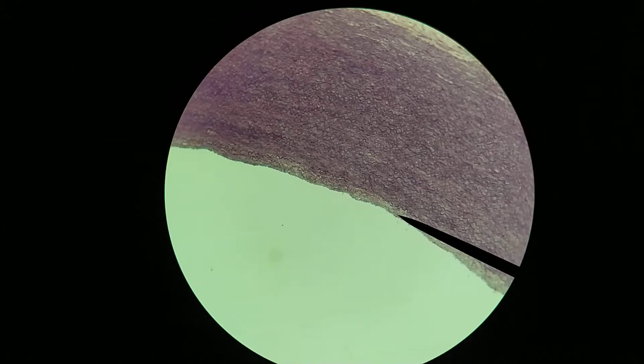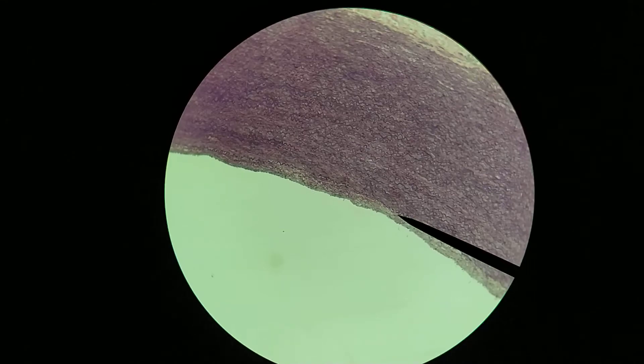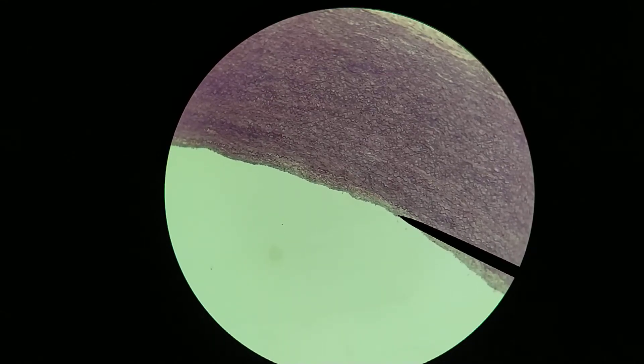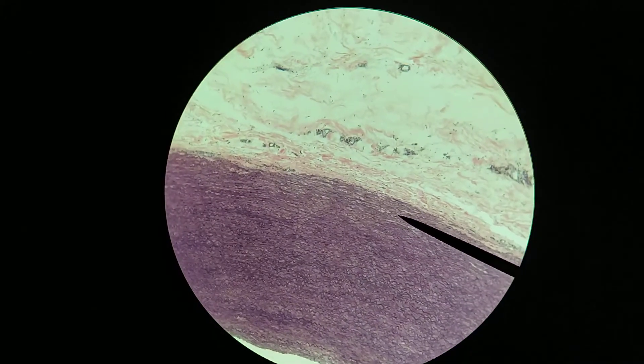This more lightly staining area is the internal layer, so the tunica intima, right there. And then we have this more intensely staining region right there. This is, again, the tunica media.